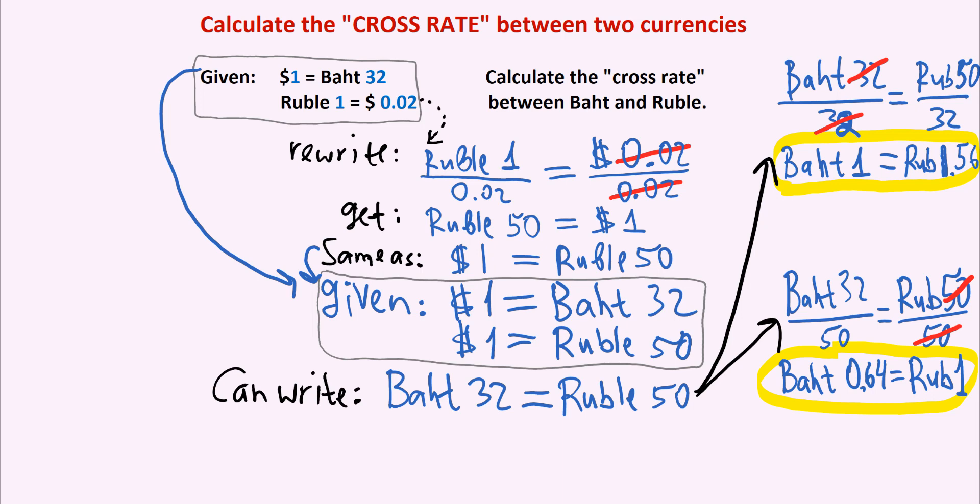So again, to clarify, we calculated the cross rate two different ways. They're both equivalent. So we have two ways of writing the cross rate between the Thai baht and the Russian ruble.